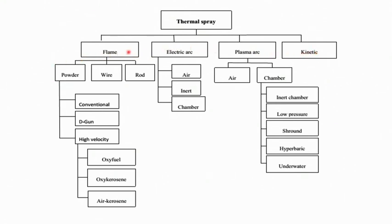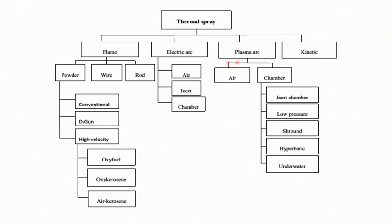In flame spray deposition you use an oxy-acetylene flame as the source of heat. In electric arc spraying you use electric arc as the source of heat. In plasma spraying you use plasma arc as the source of heat. On the other hand, in kinetic spraying you do not use any high heat source for melting — this is also called cold spraying, because the material is in an unmolten or semi-molten state to avoid overheating and degradation of the powder.